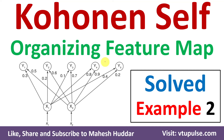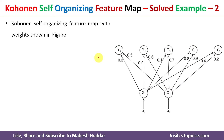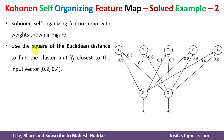Welcome back. In this video I will discuss Kohonen Self-Organizing Feature Map with the help of a solved example. This is solved example number two; links for other examples are given in the description below. We have been given the self-organizing map as shown in the figure. We need to use the square of Euclidean distance to find the cluster unit closest to the input vector 0.2, 0.4. The input vector contains two components.